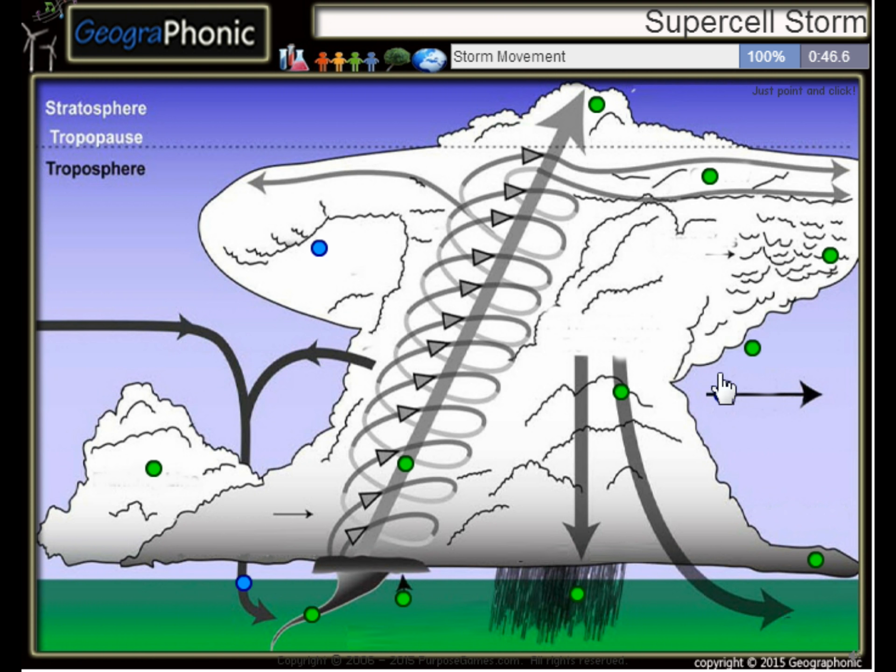This is the direction of the storm movement. This is the angle of the anvil cloud. This is a rear flank downdraft.